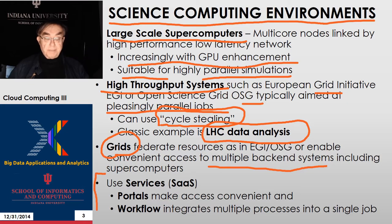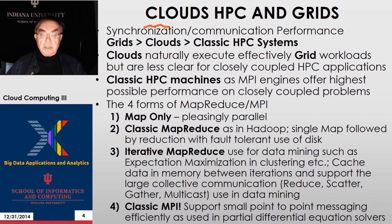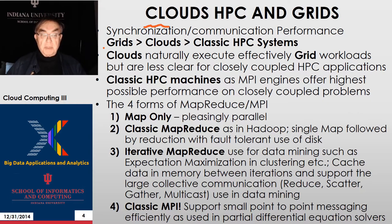All of these environments are built nowadays on a computing model which involves services, portals which make access convenient, and workflow which integrates multiple processes into a single job. Workflow, if you remember, was called orchestration when we discussed the 21 layers of HPC. When comparing clouds, high performance computing, and grids, one area they differ is in synchronization — the cost for two entities in the system to communicate with each other.